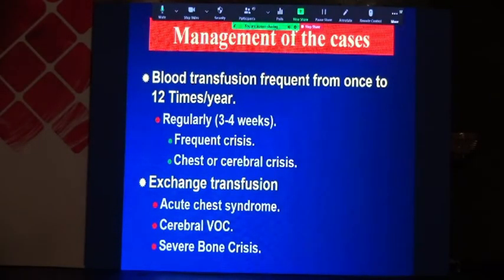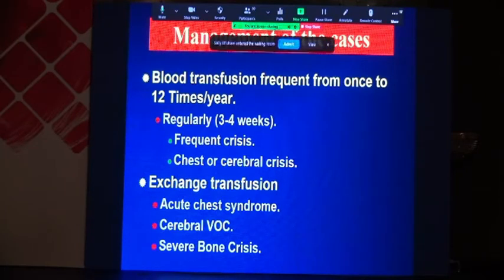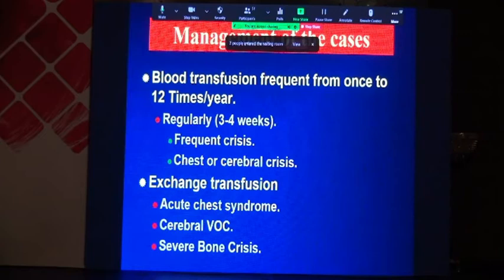Regarding management, when we give blood transfusion to these patients, it is either infrequent or frequent — up to 12 times per year. We can give regularly every 3–4 weeks if there is frequent crisis, or if there is a chest or cerebral crisis. We perform exchange transfusion when there is acute chest syndrome, cerebrovascular occlusion, or severe bone crisis.